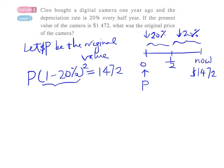And this will be 0.8 squared which is 0.64, and therefore we can find the value of P.